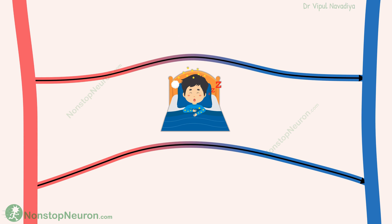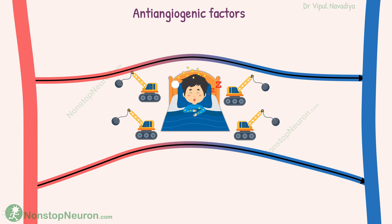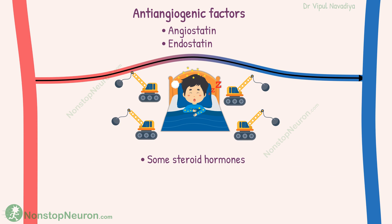Opposite to this, if the demand is decreased for a long time, the vascularity is decreased. There are anti-angiogenic factors like angiostatin and endostatin that inhibit angiogenesis. Some other substances like certain steroid hormones can even destroy existing vessels. Thus, the blood vessels can be destroyed if they are not needed anymore — this is how blood vessels are created or destroyed as needed.